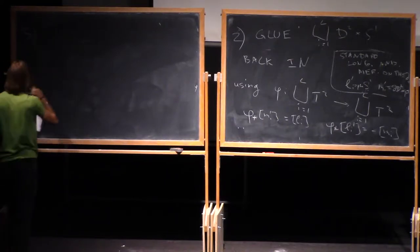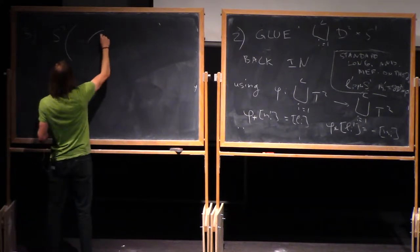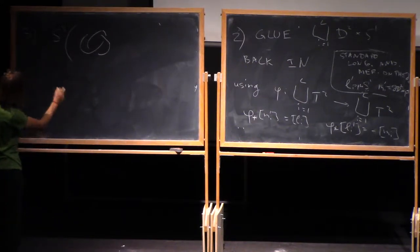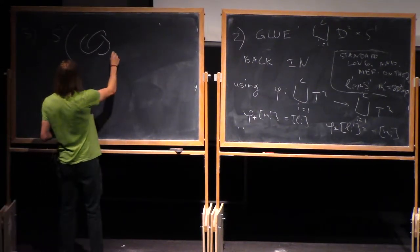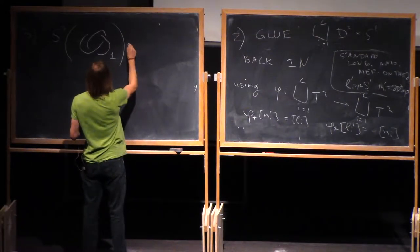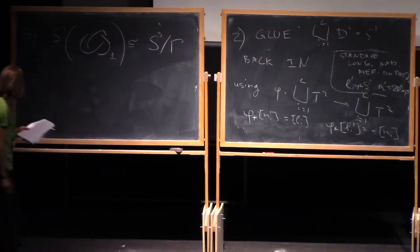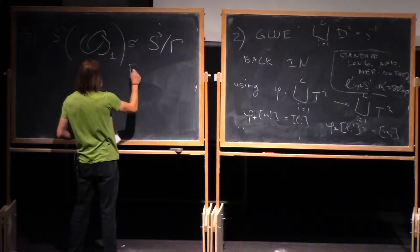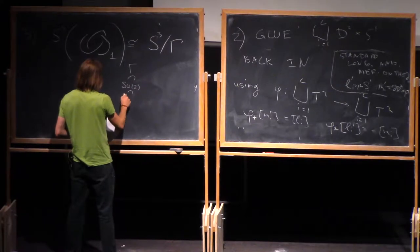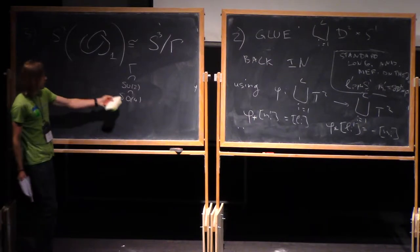Example three. If I take a Dehn surgery on left-handed trefoil with framing 1, the result is a quotient of S3 divided by gamma, where gamma is a certain subgroup of SU2, which is in turn subgroup of SO4, which acts on the standard S3 embedded in R4.